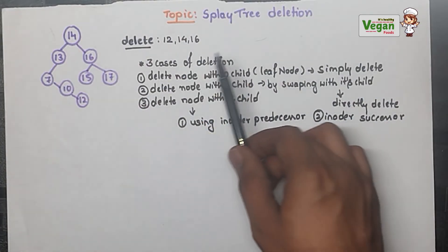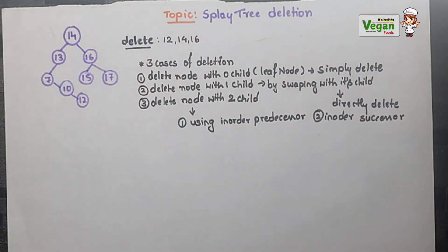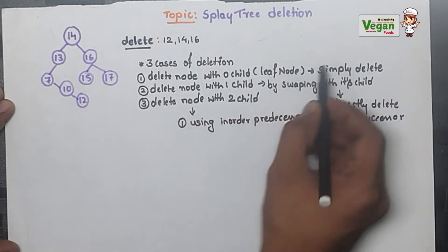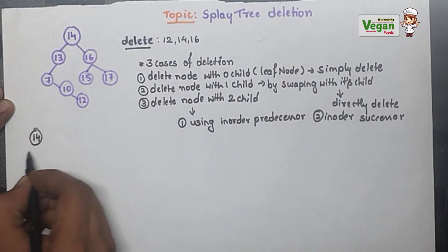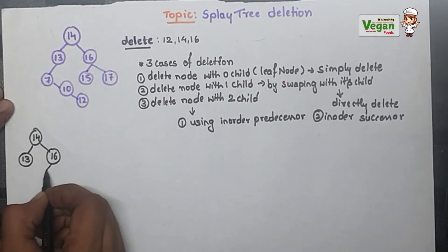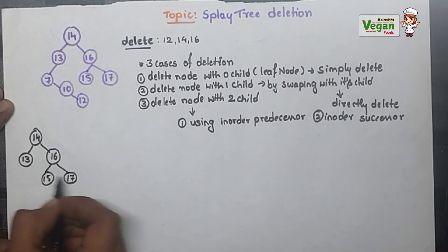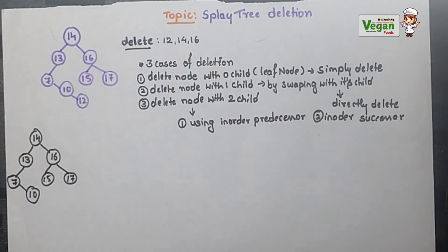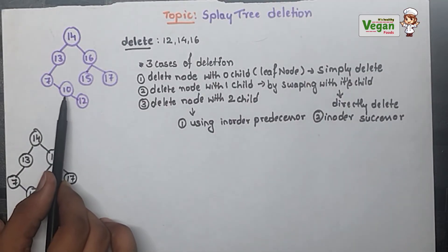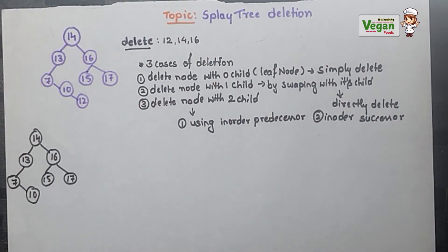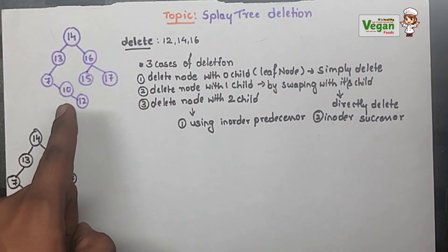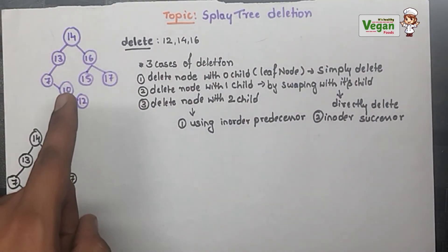First, they have told us to delete 12. Where is 12? 12 is a leaf node, so zero children means simply delete 12. After deleting, the tree will have 14, 13, 16, 15, 17, 7, and 10 — because I deleted 12 directly. Now what I should do is make the parent of the deleted node as the root node. The parent of 12 is 10, so I must make 10 the root node — this is the splaying operation.